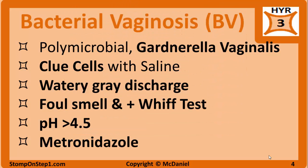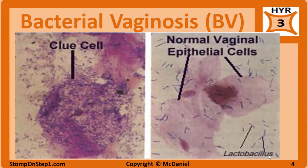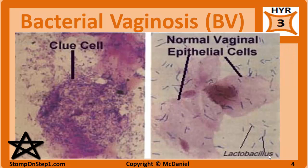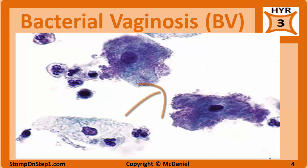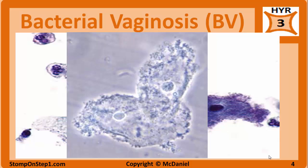Bacterial vaginosis, also known as BV, is a polymicrobial infection caused by the overgrowth of normal flora. The key bacteria in this infection is gram-negative Gardnerella vaginalis. Clue cells are visible on the saline portion of a wet prep. A clue cell is a sloughed mucosal squamous epithelial cell covered in many adherent coccoid bacteria, Gardnerella vaginalis. Here is a picture comparing normal squamous epithelial cells with a few scattered lactobacilli to squamous cells covered in thousands of adherent Gardnerella bacteria. On the left we have the normal squamous epithelial cell with a few white blood cells, and on the right we have the darker clue cell. A photomicrograph is also shown in case you see that on your test.